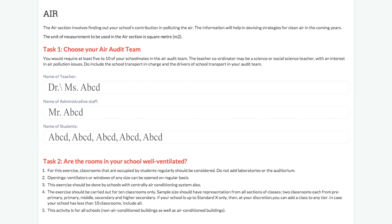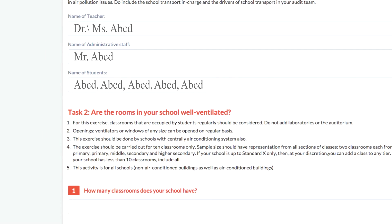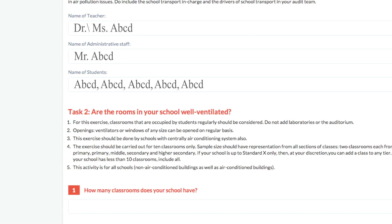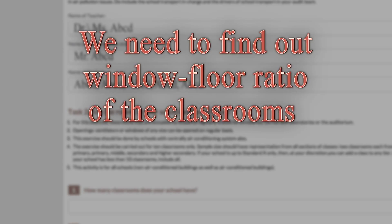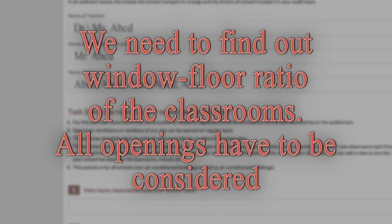Now that we have a team ready, let us look at the responsibilities of this team. Task 2 will help you find out if the classrooms in your school are well ventilated. To find out, we need to find out the window-floor ratio of the classrooms. All openings have to be considered.